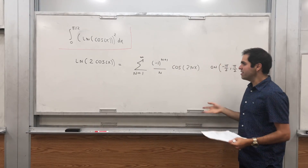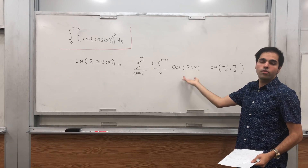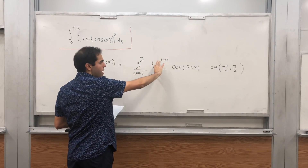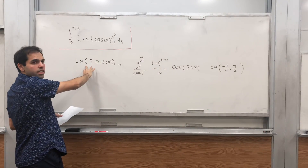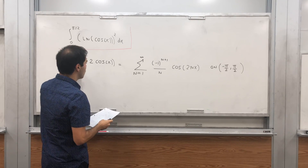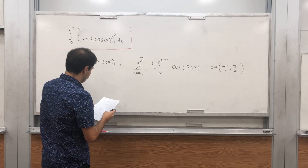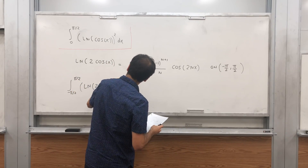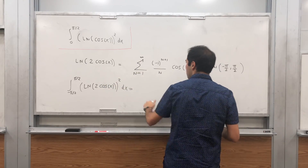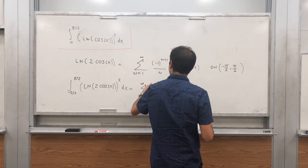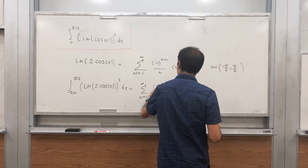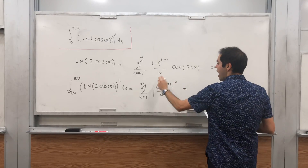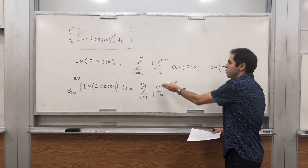The question is: how can we use this? Well, since this is a Fourier series, we can use Parseval's identity, which simply says if you take the sum of the squares of those terms, it becomes the integral of this term squared. So the integral from -π/2 to π/2 of [ln(2cos(x))]² dx equals the sum from 1 to infinity of the absolute value of (-1)^(n+1)/n squared. Since n is positive, the absolute value of (-1)^(something) is just 1, so this becomes the sum from 1 to infinity of 1/n².